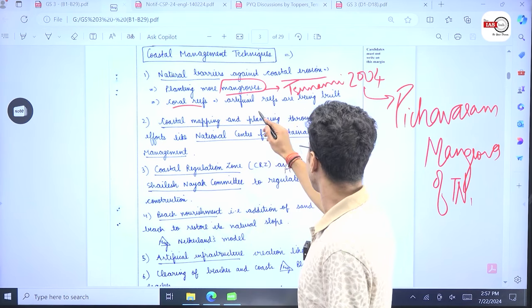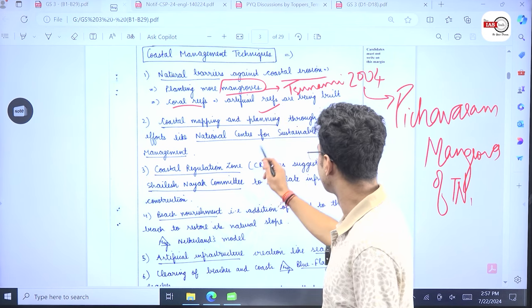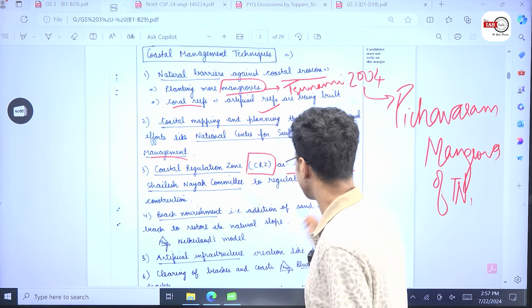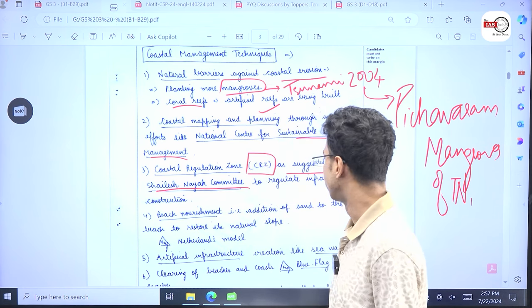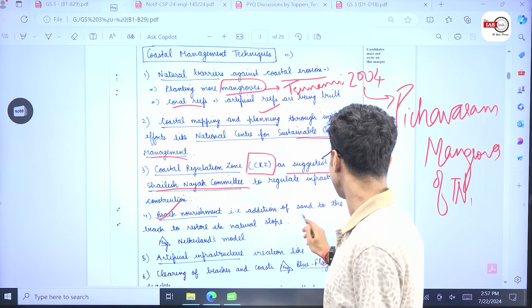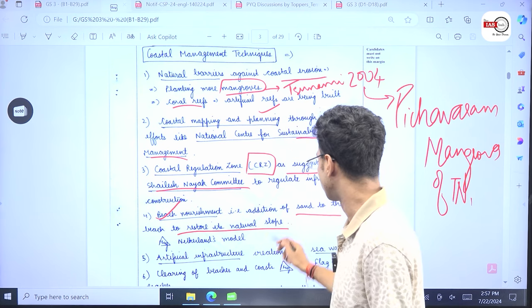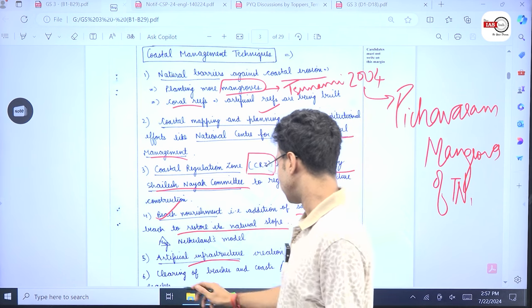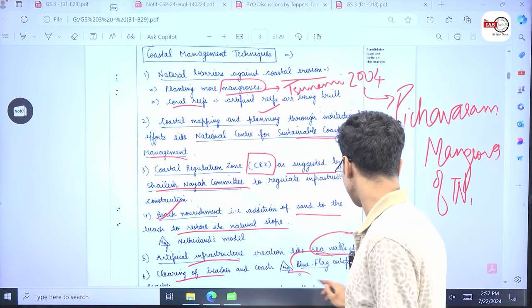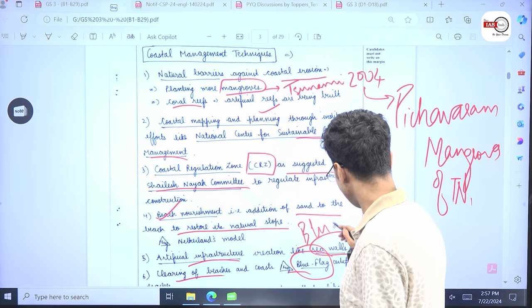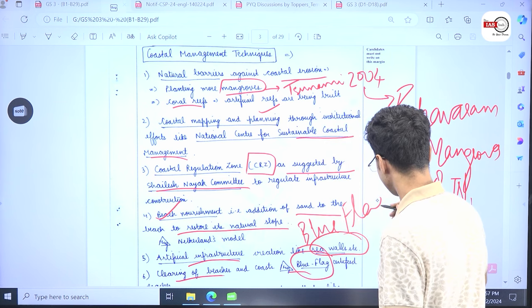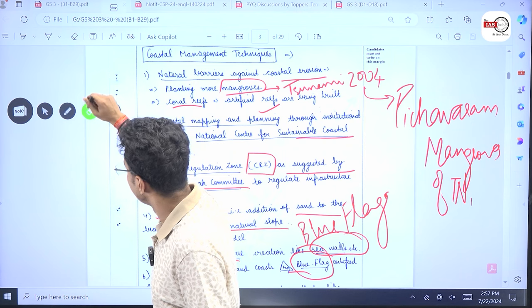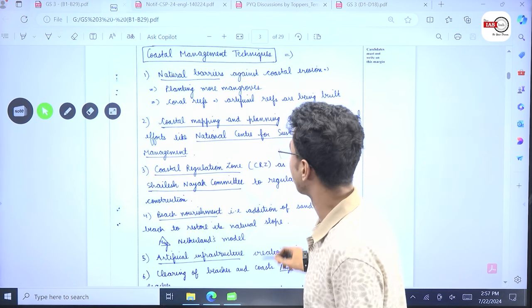Coastal mapping and planning through institutional efforts like National Center for Sustainable Coastal Management. Coastal regulation zones. Yes, CRZ. As suggested by Salish and I committee to regulate the infraconstruction. Beach nourishment that is addition of sand to beach to restore its natural slope. Artificial infrastructure creation like sea walls. Clearing of beaches and coasts. You know there is something called blue flag certification. Blue flag certification by a Denmark based institution.